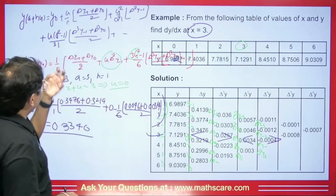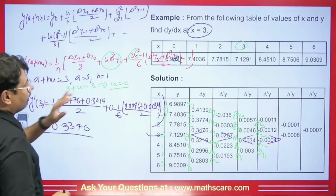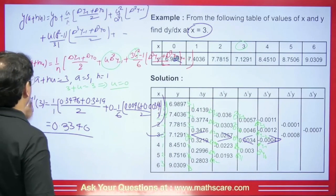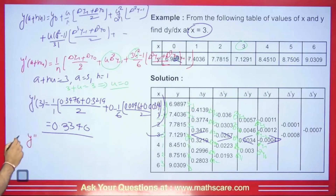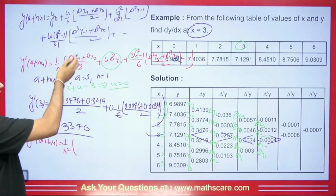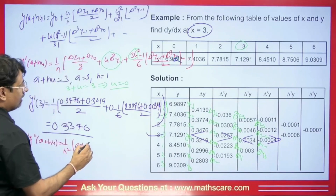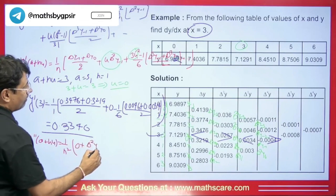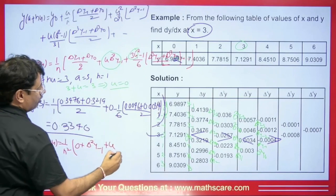Sometimes we are asked for the second-order derivative. We differentiate the formula once more with respect to U. One more H comes forward, giving 1/H² overall. Differentiating again: the first-order terms become zero, the Δ²Y₋₁ term remains, and the 6U/6 = U term gives U·(Δ³Y₋₁ + Δ³Y₋₂)/2.